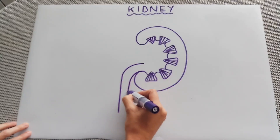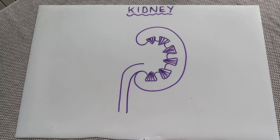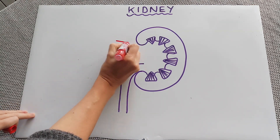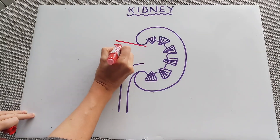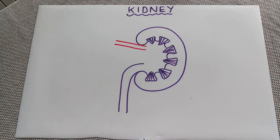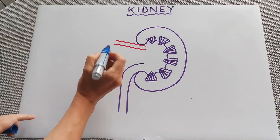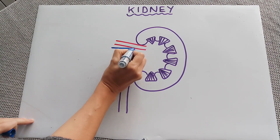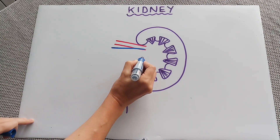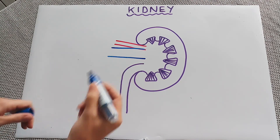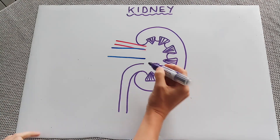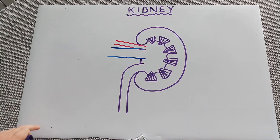We need some tubes coming into and out of the kidney. For the blood vessels I'm going to use two different colors — in yours you do not need to do any kind of color coding, this is just to make it obvious in this video. So we've got red for the artery and blue for the vein.